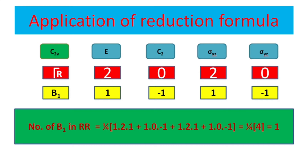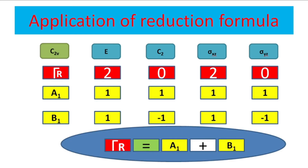For B1: the number of times B1 occurs equals 1 upon 4 into (1 into 2 into 1) plus (1 into 0 into minus 1) plus (1 into 2 into 1) plus (1 into 0 into 1), giving B1 occurring one time. For B2: the summation in brackets gives 0, so B2 occurs 0 times. The conclusion is that the reducible representation is made up of A1 and B1 as irreducible representations.